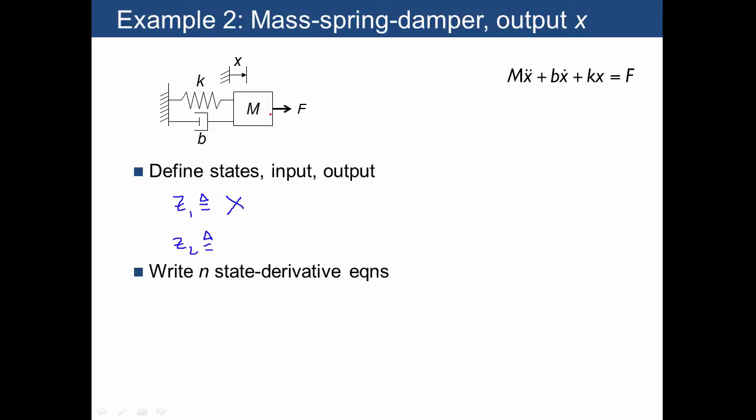And then one-half mv squared, or x dot squared, is the energy for the mass. So we're going to use x dot, or you can call it v, for the second state. So we've defined two states.